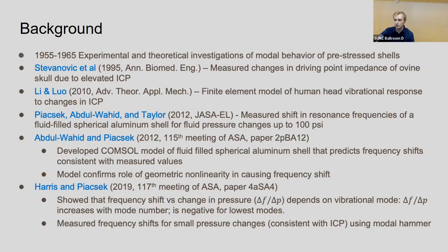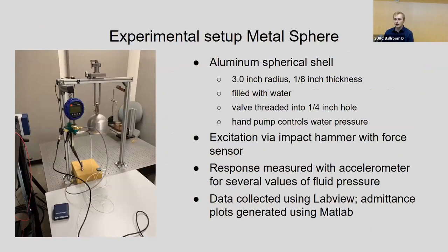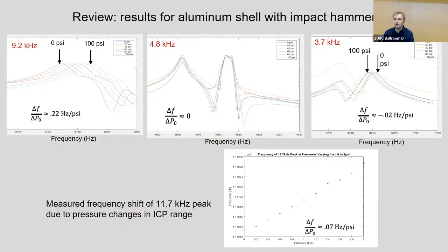They developed a console model consistent with the frequency shifts measured. Later, a student studied small pressure changes using a modal hammer and consistently found that even for small pressure changes, resonance frequency shifts were still observed. For the metal sphere experiment, they used a force sensor hammer and pressure gauge. At higher frequencies around 9.2 kilohertz, they saw relatively large frequency changes of around 0.2 hertz per psi. For low pressure data, they were still seeing around a 0.7 hertz per psi change from 0 to 2 psi.